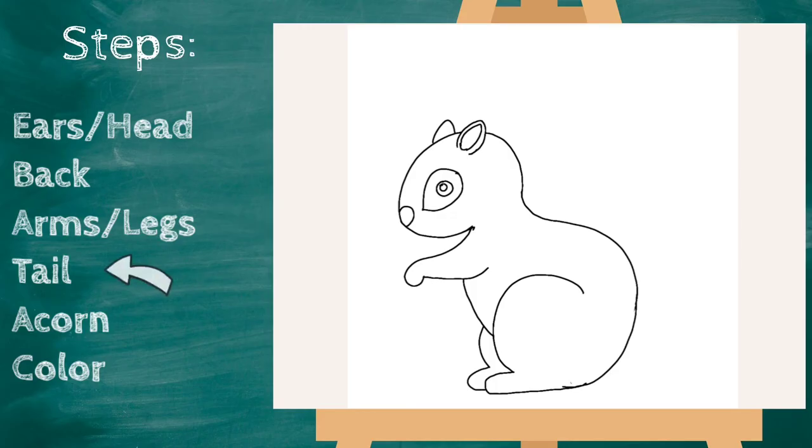Next let's draw his tail. Now I'm gonna start my squirrel's tail all the way up here at the top of his back. Squirrels have big bushy tails, so we're gonna make a big curve line. It's gonna go up over his head and curl around like that.